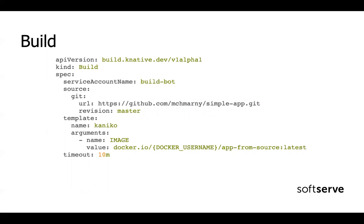Some definition of how to use Build — again, custom resource definition, which is also pretty straightforward. The most interesting part: for the source, we can use Git and just put the Git repository and branch, which is nice because we don't need to do any other magic — it supports cloning, etc. And here, we don't even need to add a Dockerfile; we just need to add some kind of base image, which makes it even easier. As far as I know, it also supports Dockerfiles.